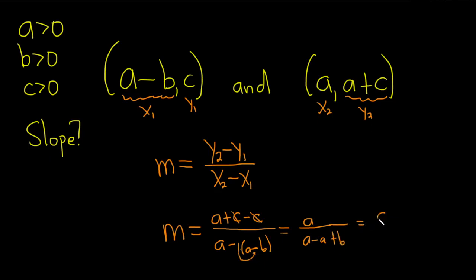So this is just going to be a over, a minus a is zero, so you get zero plus b. So it's just a over b. So that's our slope.